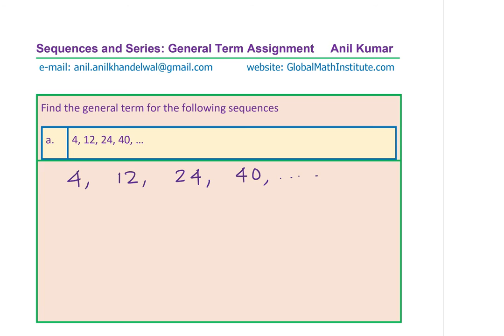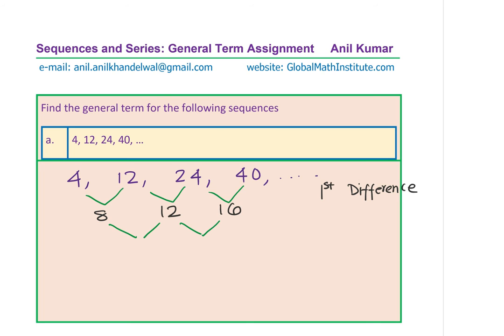The first thought which comes to our mind is to find the difference. So what we can do is find the first difference, the second difference, and the third difference. Let's find the first difference. What do you notice? Well, 12 minus 4 is 8. 24 minus 12 is 12, and 40 minus 24 is 16. We do see a pattern — it's going up by 4 each time.